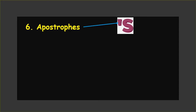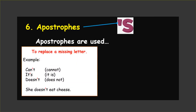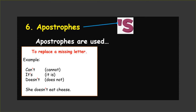And finally, we are going to study about apostrophes. Apostrophes are used to replace a missing letter. See the example: 'Cannot' — C-A-N-N-O-T — when I write 'can't,' one letter is missing, but instead of that, I use an apostrophe. Cannot becomes can't, 'it is' becomes 'it's,' 'does not' becomes 'doesn't.' For example: 'She doesn't eat cheese' — instead of 'She does not eat cheese,' we make it shorter using an apostrophe.